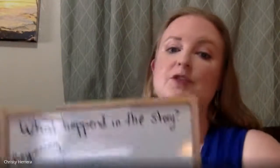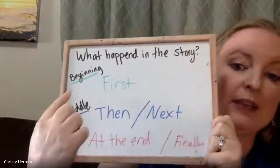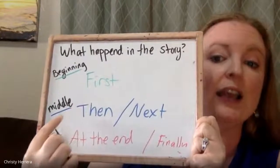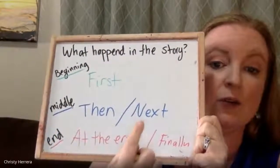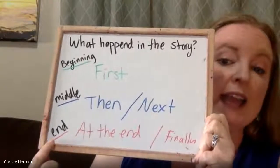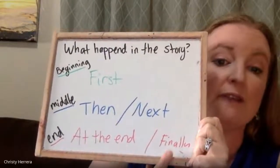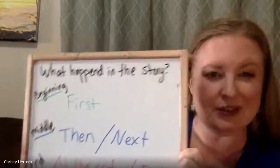Okay, my writers. So you've already read the story, Jack and the Ball, and we just talked about what happened in the story. Remember, we said what happened in the story? In the beginning, the fancy word you can use is 'first.' When you're talking about the middle, you can use 'then' or 'next.' And at the end, you can say 'at the end' or 'finally.' So keep those in mind because we're going to use them right now.